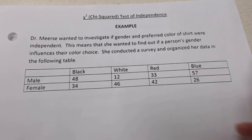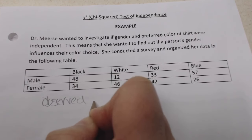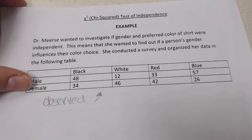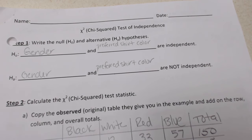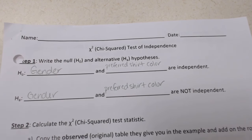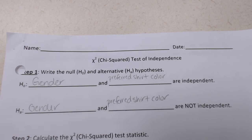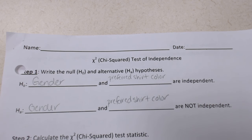This table is our observed — what we observed as we went through and compiled the data from our survey, so this is called the observed table. Doing a chi-squared test of independence, you received this worksheet and I filled it out so the video would go a little bit faster. We are going to go through the steps just like I did in class; you may want to pause to get the notes or to make sure you're understanding correctly.